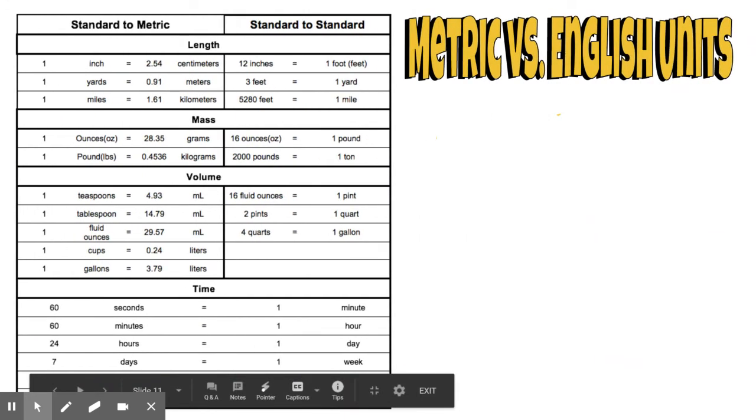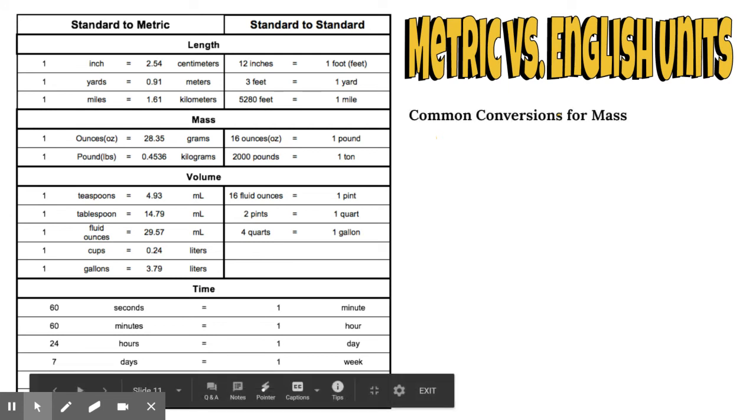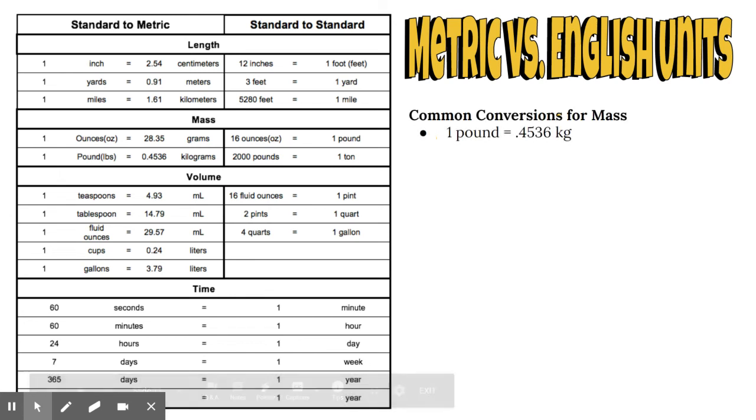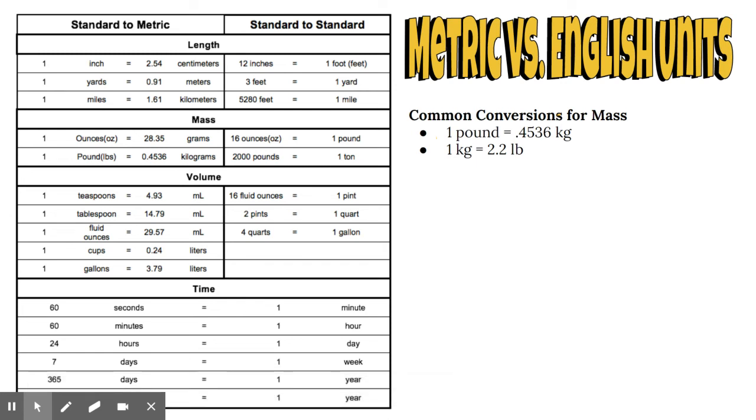We've been talking about metric units, which we don't use in our daily lives a lot. We measure things in feet and inches, and in pounds and ounces instead of kilograms. Common conversions for mass: one pound equals about 0.4536 kilograms, or one kilogram equals about 2.2 pounds. If you have something that weighs 2.2 pounds, it also equals one kilogram.